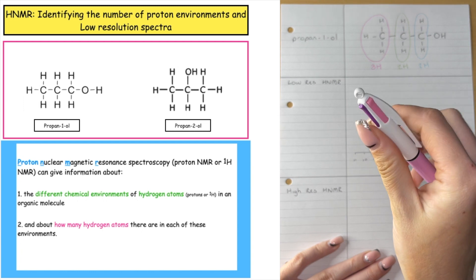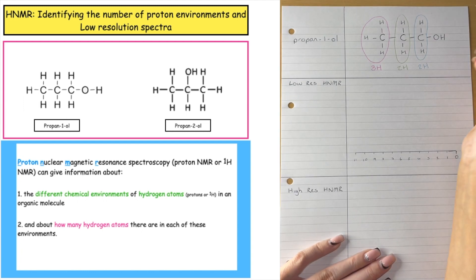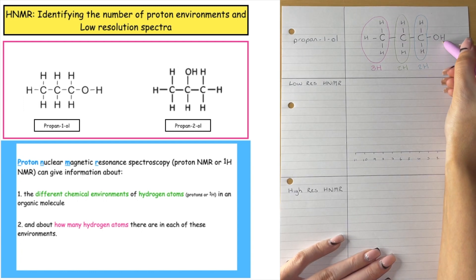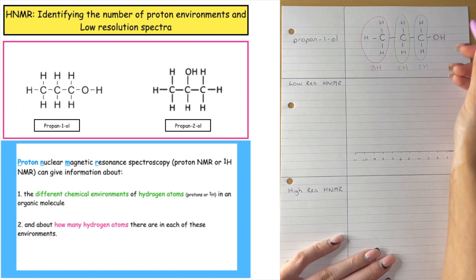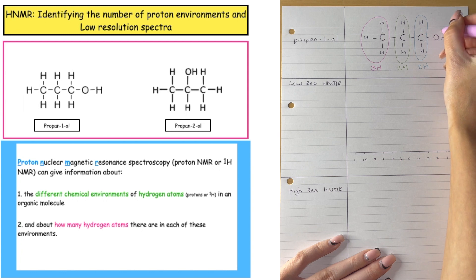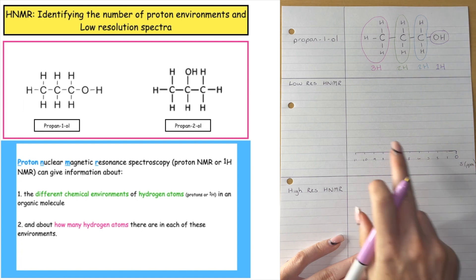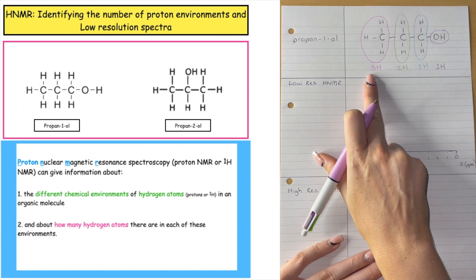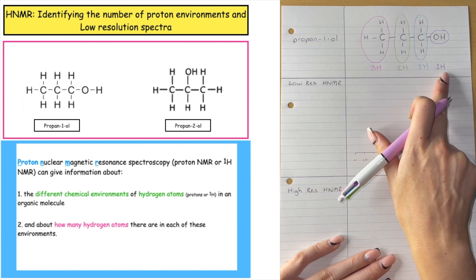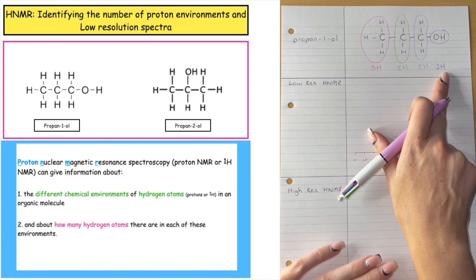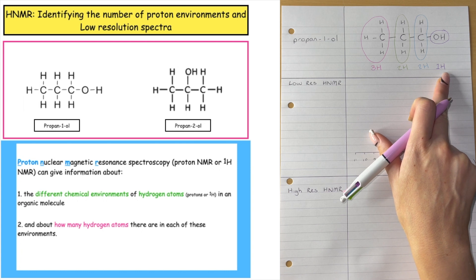Then we have the hydrogen bonded to the oxygen. We don't have that anywhere else, so that is our fourth proton environment. Because we have four different proton environments, we will see four different peaks in our low-resolution HNMR spectra.